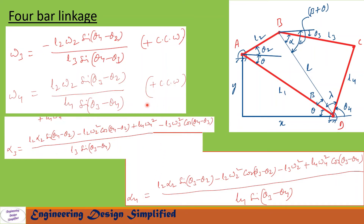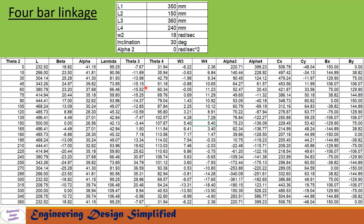The formulas for omega3, omega4, alpha3, and alpha4 are common for any configuration or orientation of a four-bar linkage. To derive omega3 and omega4 — the angular velocities of links 3 and 4 — we differentiate the position equations once and solve. To find alpha3 and alpha4, we differentiate the position equations twice and solve. Links to videos deriving these equations are provided in the description box below.